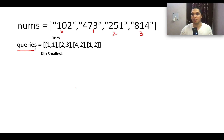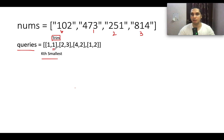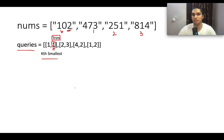Each entry in the queries array has two parts: the first is k (kth smallest) and the second is trim. Trim holds the value 1, which simply means the number of digits starting from the rightmost digit that should be considered while sorting is 1. So we extract the last 1 digit from each number: from 102 we get 2, from 473 we get 3, from 251 we get 1, and from 814 we get 4. On the basis of these digits, we sort the elements.